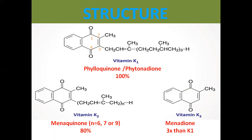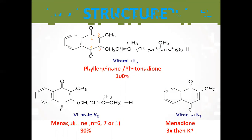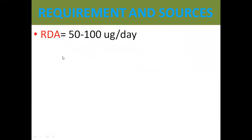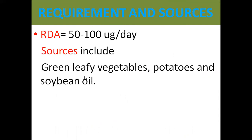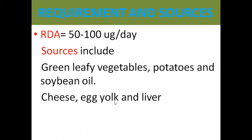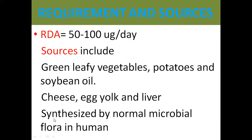Vitamin K is fat-soluble, but its synthetic analogue, Vitamin K3, is water-soluble. The K3 phosphate ester form is used clinically. The RDA for Vitamin K is 50–100 micrograms per day. Plant sources include green leafy vegetables, potatoes, and soybean oil. Animal sources include cheese, egg yolk, and liver. This vitamin can also be synthesized by the normal microbial flora in the human intestine.